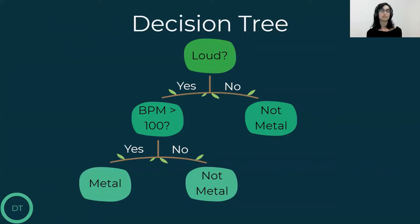But metal songs are more than just loud. And we can also ask questions that their answers are not binary. For example, if we want to ask something about how fast the song is, we can use the BPM we mentioned earlier, beats per minute, and we can ask if the song's BPM is larger than 100. And since most metal songs are faster than that, that should give us better separation between the classes.